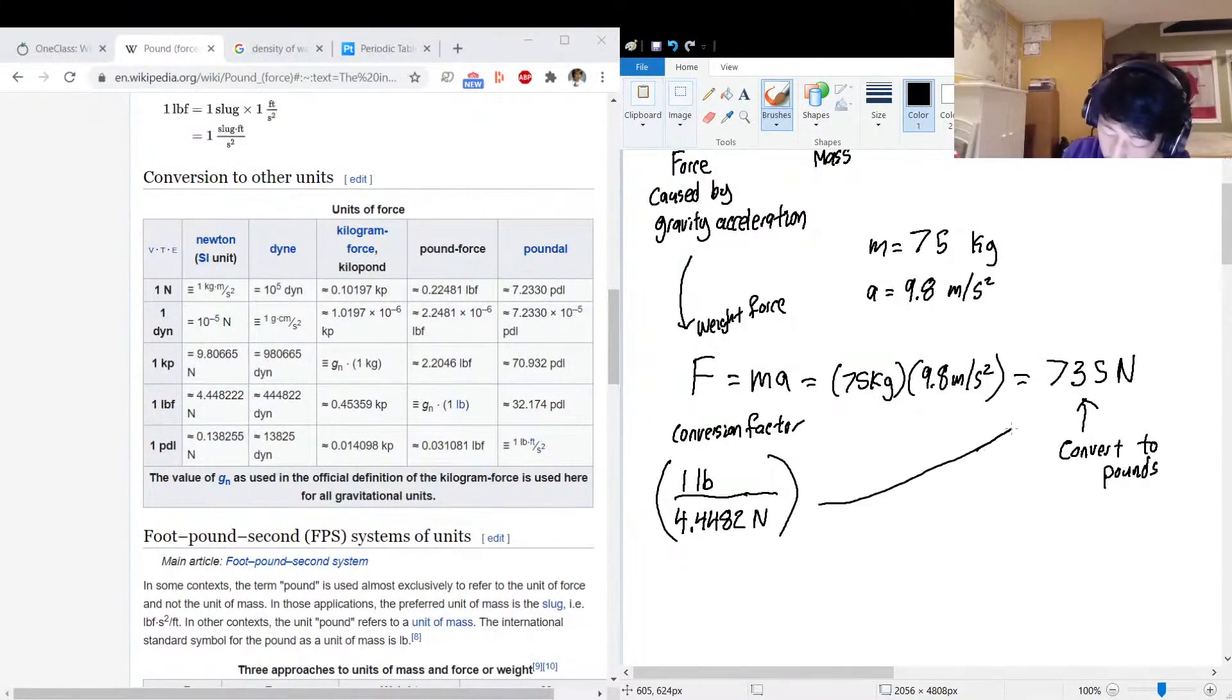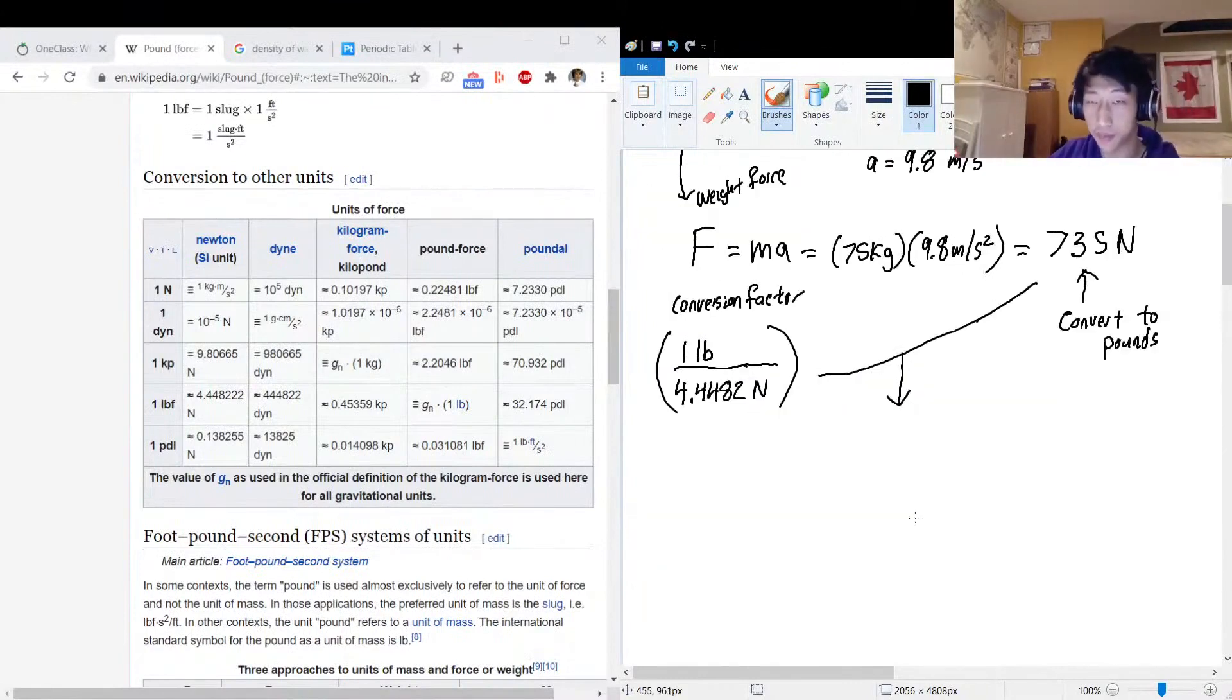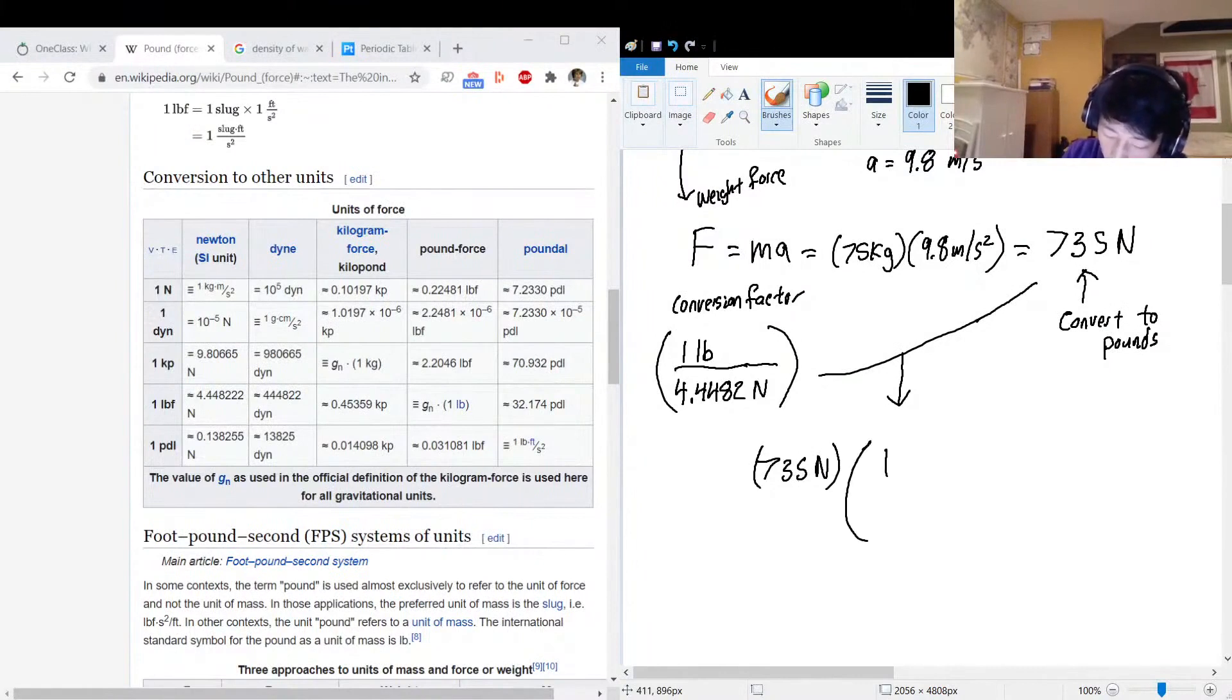And we are going to incorporate these two like so. Okay, so we're going to multiply these two terms together. So 735 newtons multiplied by one over 4.44822 newtons, or one lb on top.